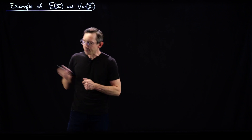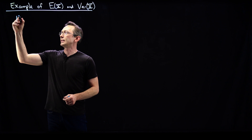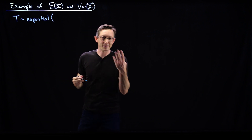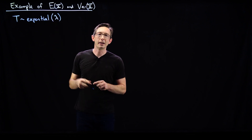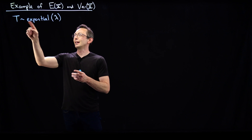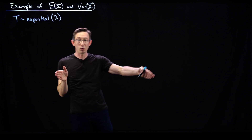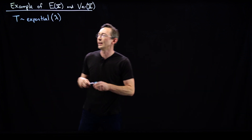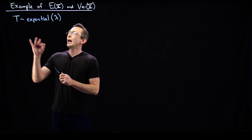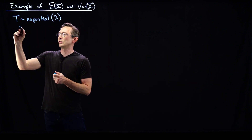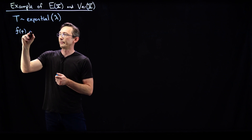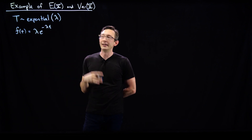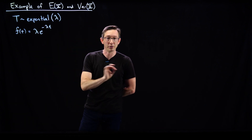Let's say that we have some random variable t and it is exponentially distributed. The exponential distribution has this lambda parameter, the hazard rate. This is the distribution for the waiting times between Poisson random events, like getting an email, a phone call, or a light bulb failure. The probability density function for this distribution, f(t), is equal to lambda times e to the minus lambda t — a really nice, well-behaved, smooth distribution parameterized by a single number lambda.